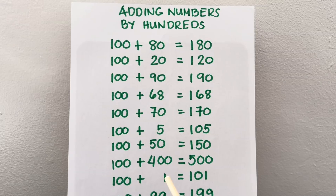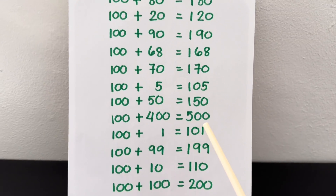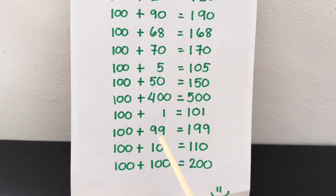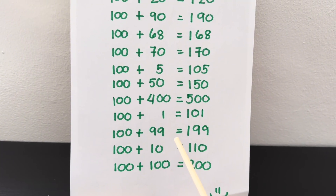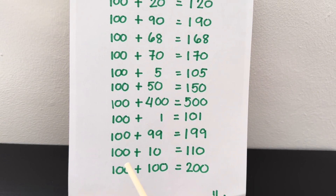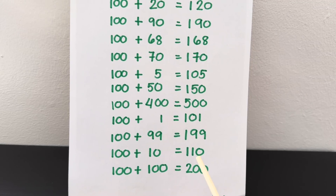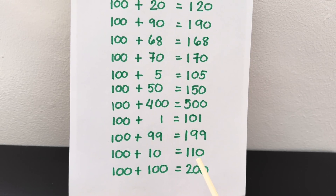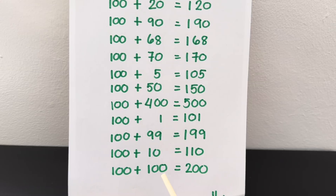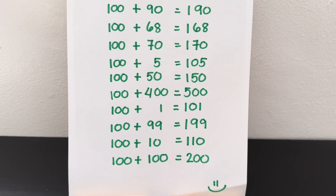100 plus 1 is equals to 101. 100 plus 99 is equals to 199. 100 plus 10 is equals to 110. 100 plus 100 is equals to 200.